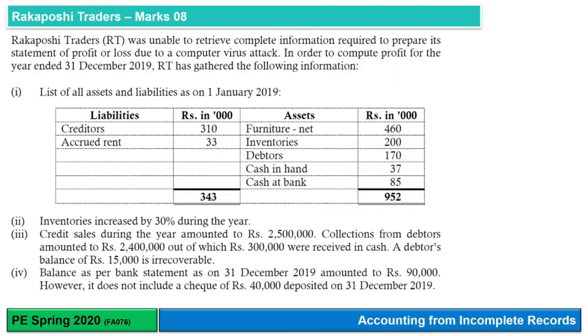Welcome to ABC Campus. Today we are doing accounting from incomplete records. We are going to do a past exam — Spring 2020. The title is Rakaposhi Traders, and this is 8 marks.